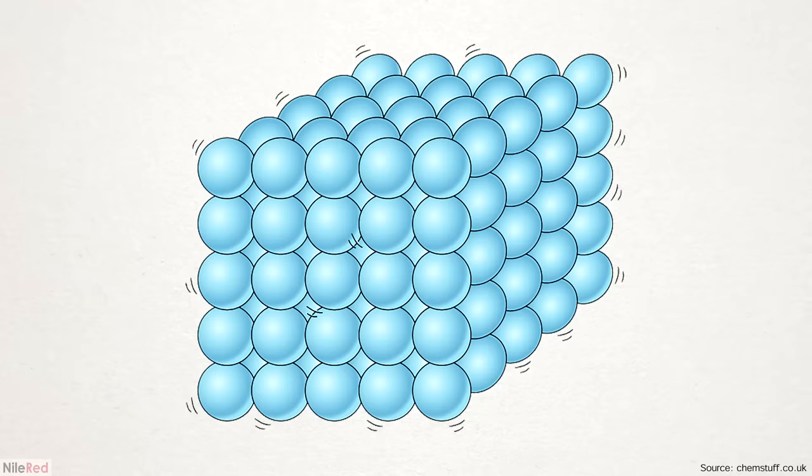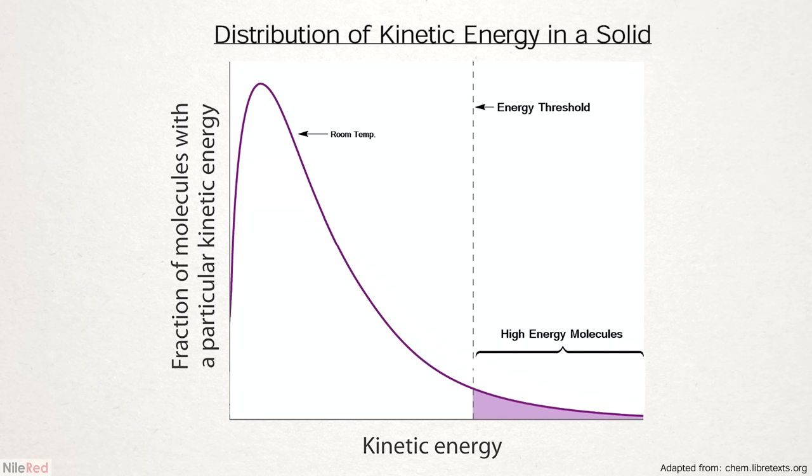In all forms of matter, molecules are constantly vibrating, and the speed that they do this at is related to their kinetic energy. In solids, the molecules are constrained by a lot more forces, but they do still vibrate. However, a given solid doesn't just have one uniform kinetic energy, it's actually a mix of molecules, all with different levels.